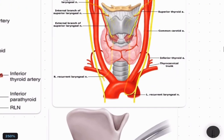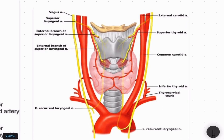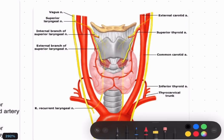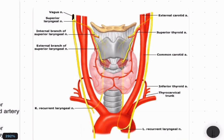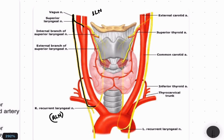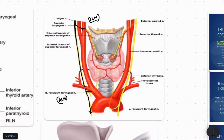Now for the nerve supply of the thyroid gland — focusing on the vagus nerve: the vagus nerve comes down and gives off the superior laryngeal nerve, and then the main stem of the vagus nerve continues downward giving another branch, the recurrent laryngeal nerve. The vagus nerve then continues further down where it forms anterior and posterior trunks at the level of the stomach.